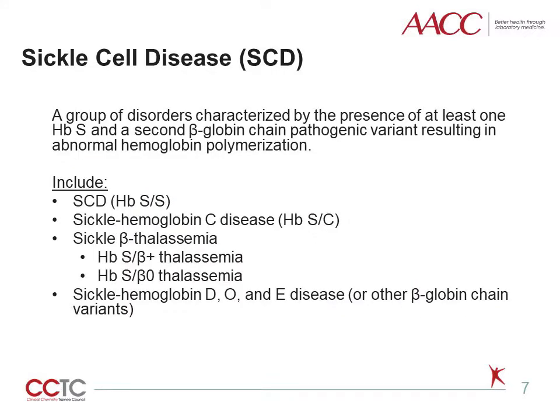Sickle cell disease refers to a group of disorders characterized by the presence of at least one HbS and a second beta-globin gene pathogenic variant, resulting in abnormal hemoglobin polymerization. Sickle cell disease HbSS is caused by the homozygous beta-globin gene variant p.Glu6Val. It is the most common cause of SCD in the U.S. and accounts for 60% to 70% of cases. Other forms of SCD result from co-inheritance of HbS with other abnormal beta-globin gene variants, the most common forms being sickle hemoglobin C disease and two types of sickle beta-thalassemia.